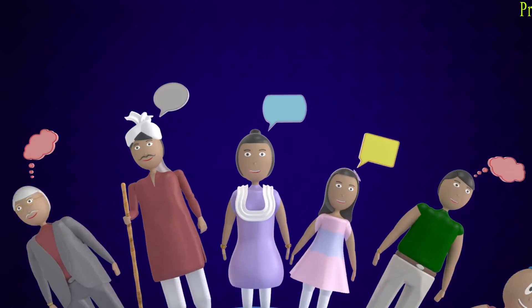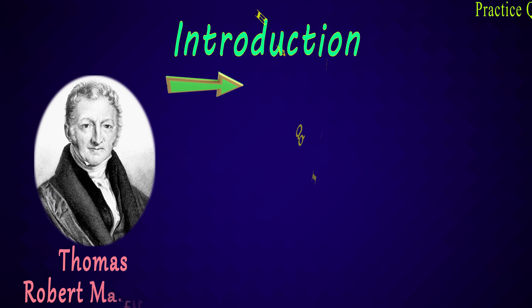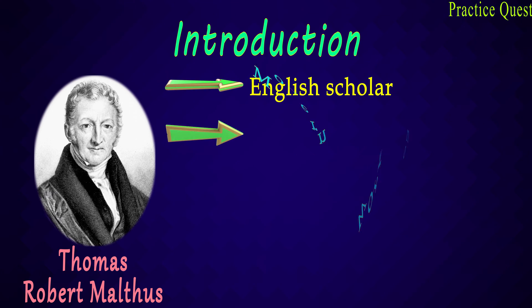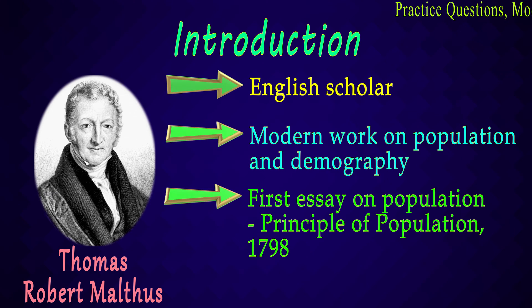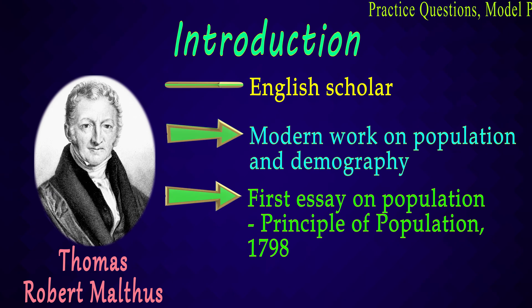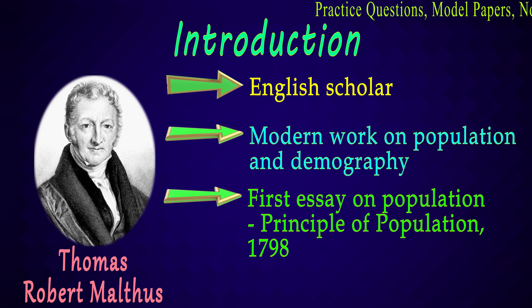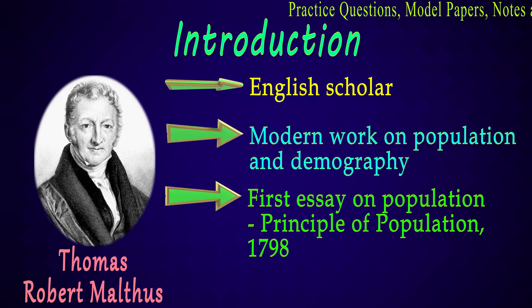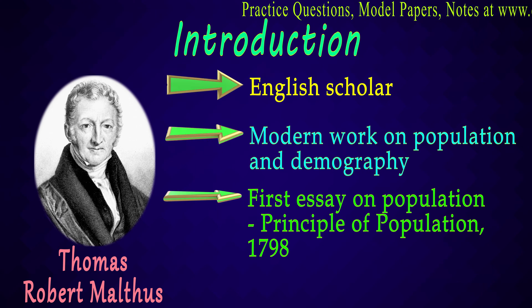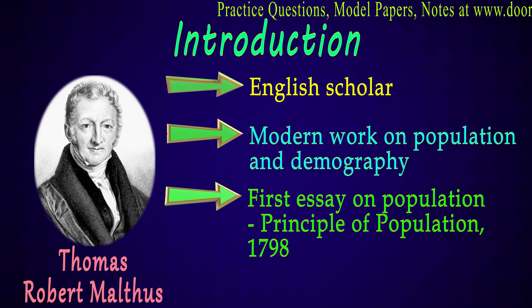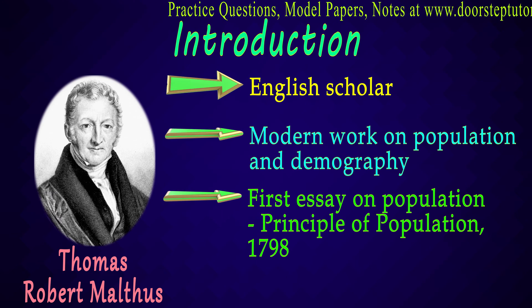Thomas Robert Malthus gave the Malthusian theory of population. He was an English scholar and he was the first thinker to talk about population. He wrote the first essay on population — that is, the Principle of Population — in 1798. This is the basis of his theory.